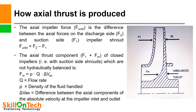How axial thrust is produced? You can see a picture of an impeller where two forces F2 and F1 are shown, and the unbalance thrust is also shown. The axial impeller force F_unbalance is the difference between the axial forces on the discharge side F2 and suction side F1 impeller shroud. Hence F_unbalance = F2 - F1. The axial thrust component Fm of closed impellers with suction side shrouds which are not hydraulically balanced is: Fm = ρ·Q·ΔVax.